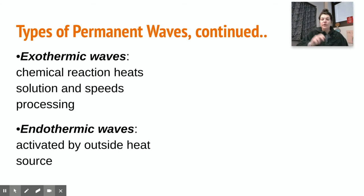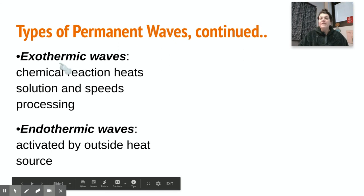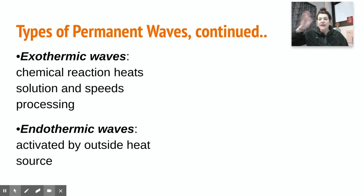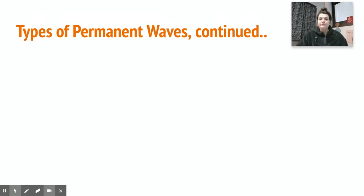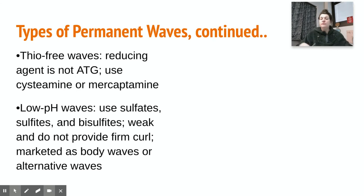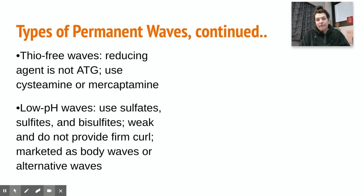Exothermic waves create a chemical reaction that releases heat and speeds the process. Endothermic waves are activated by an outside heat source — you have to apply heat. Ammonium-free waves contain no base substance and take longer to process because the main ingredient does not evaporate as readily as ammonia. Thio-free waves use cystamine or mercaptamine instead of ATG as the reducing agent. Low pH waves use sulfates, sulfites, and bisulfites — they're weak, do not provide a firm curl, and are marketed as body waves or alternative waves.